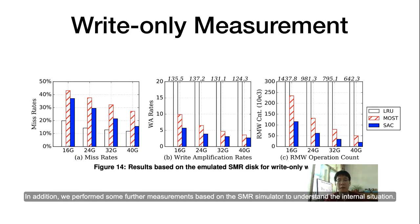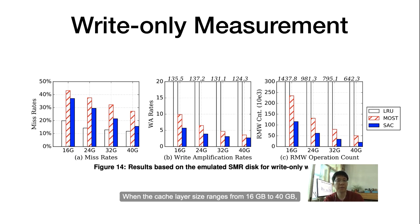In addition, we performed further measurements based on SMR emulator to understand the internal situation. The cache layer size ranges from 16GB to 40GB. The set of charts records include cache miss rate, write amplification, and number of RMW triggers. Under all cache sizes, the cache miss rate of SAC are all between LRU and MOST. SAC RMW counts are always the least, making SAC achieve the best performance among the three algorithms. The RMW counts, which are highly related to consumed I/O time, SAC has a number nearly half of MOST. This is why SAC has much better write performance.